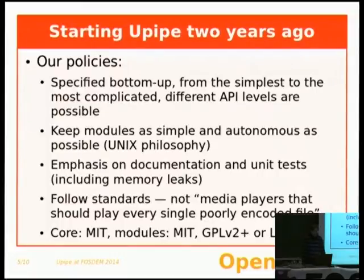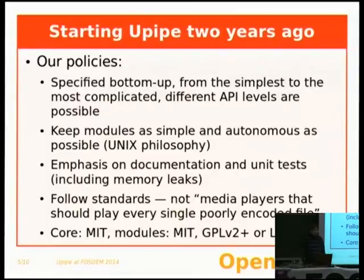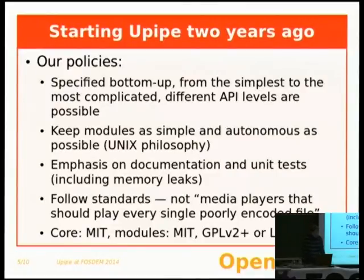We started writing U-Pipe only two years ago with new policies. We decided to specify it bottom-up. Usually you specify the API top-down — this is the API I want to expose to the application — and then go down and try to find the simplest data structures. We did the contrary. We asked ourselves: what is the simplest structure that could represent a modular pipe? What is the simplest structure that could represent a buffer? Then we built layers of APIs on top of that. Different levels of APIs are possible with U-Pipe — you can talk to the lower-level API, which we currently mostly use, but you can imagine higher level APIs as well.